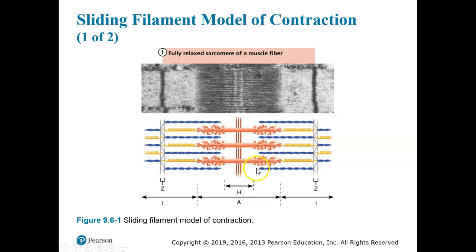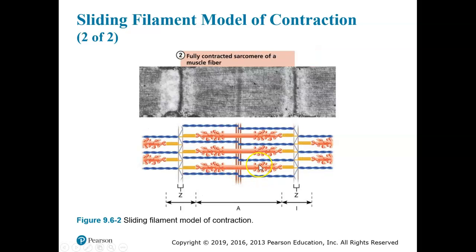In the middle of the A-band is a zone called the H-zone. When the muscle is relaxed, the H-zone — the length between the two actin filaments — is large. But look what happens when it contracts: the myosin heads attach to the actin and bring the actin in close to each other, completely making the H-zone disappear. That shows you the difference between an uncontracted and a contracted sarcomere, and that is called the sliding filament theory.